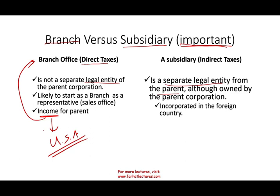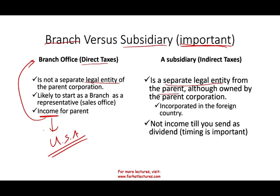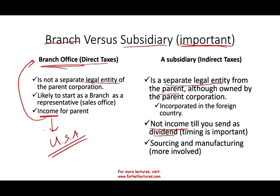The subsidiary structure gives more flexibility. For example, a Mexican subsidiary doesn't send money to the US parent unless needed — giving timing flexibility on when income is recognized and taxed. A subsidiary also typically implies deeper involvement, such as local manufacturing. The key distinction: if you are a branch, you are still part of the parent company; if you are a subsidiary, you are legally independent. There was also a recent US law change in 2018, which we'll discuss.